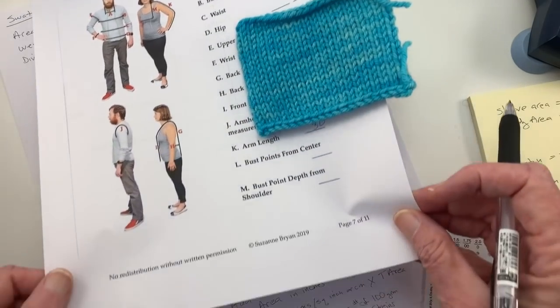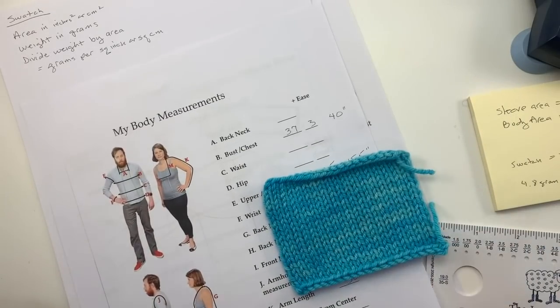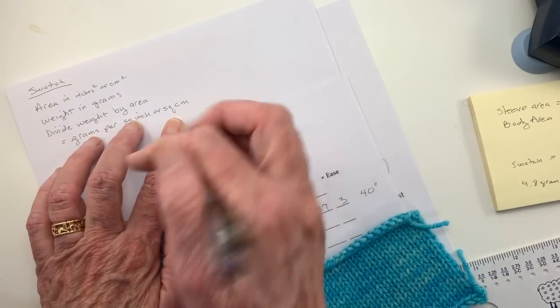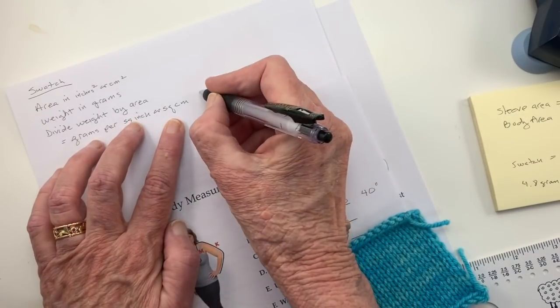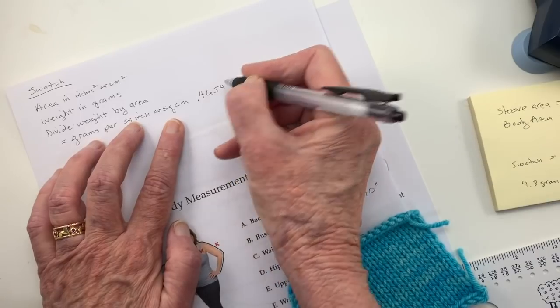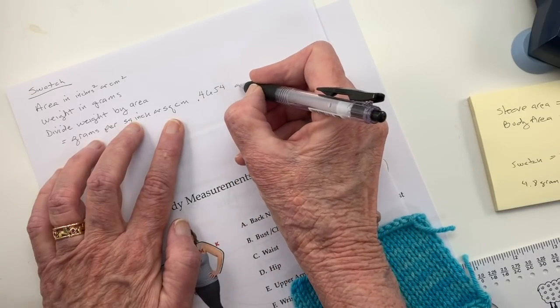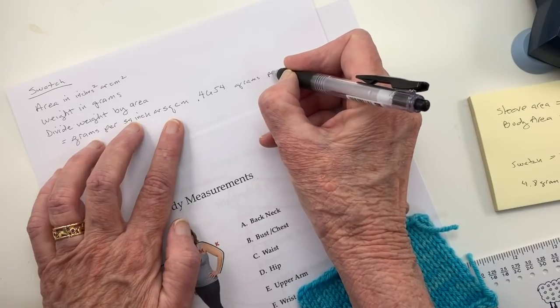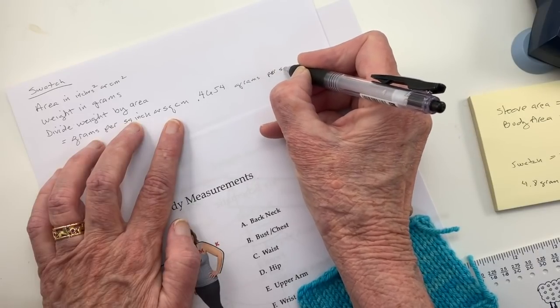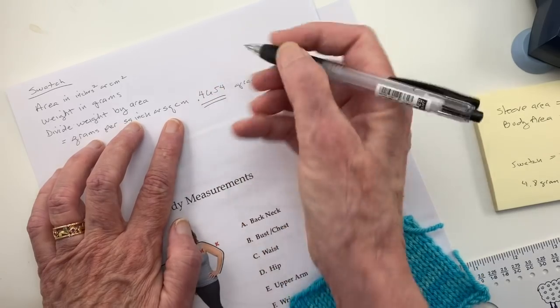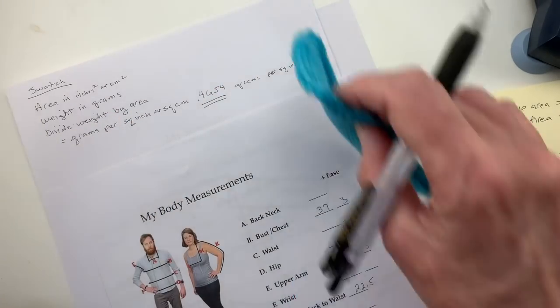In fact, I'm going to write that down right here. So I know that I'm getting 0.4654 grams per square inch. Okay, that's my important number. So we're done with the swatches.